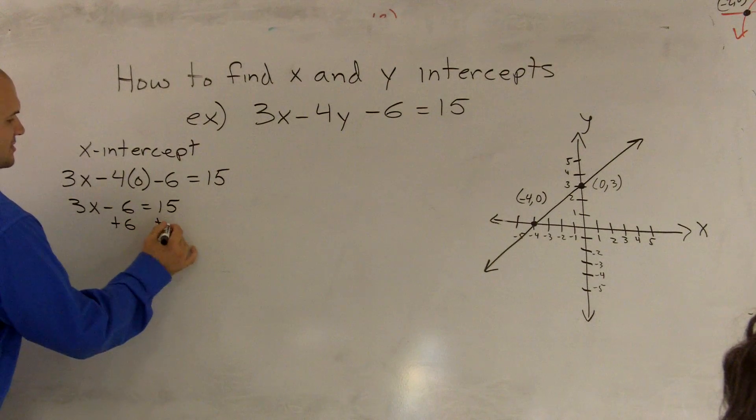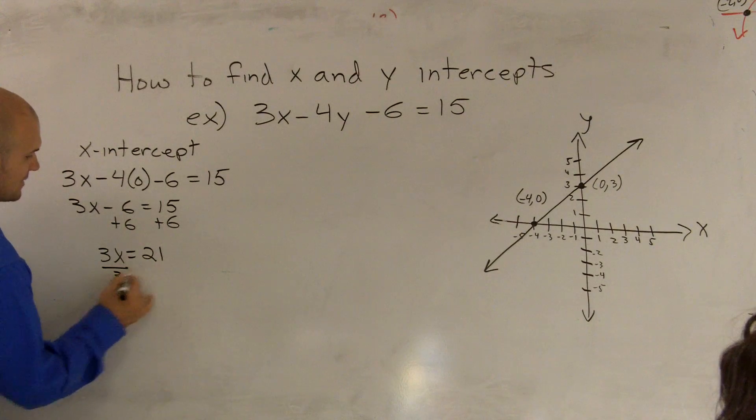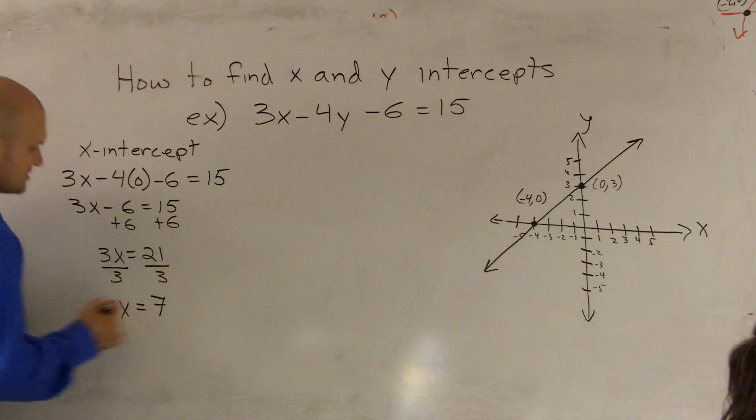Plus 6 on both sides. Therefore, I get 3x equals 21. Divide by 3, divide by 3. x is going to equal 7.